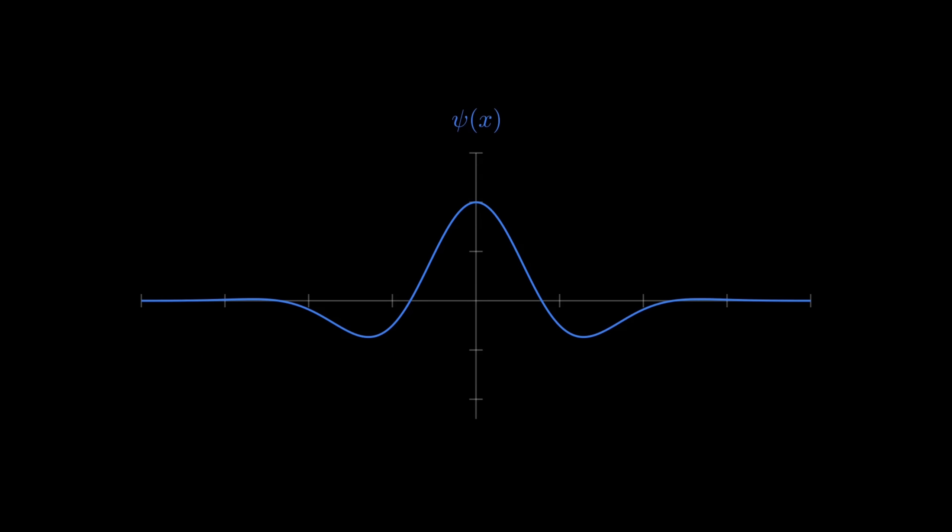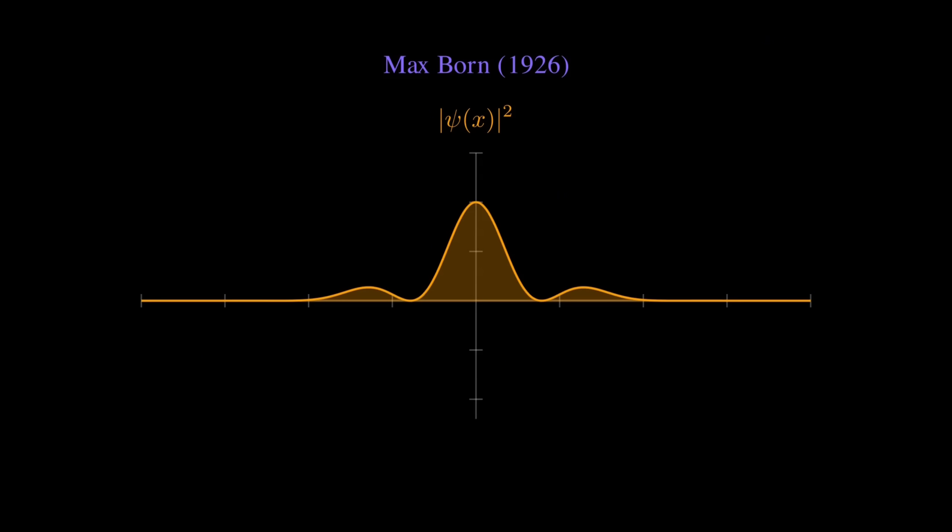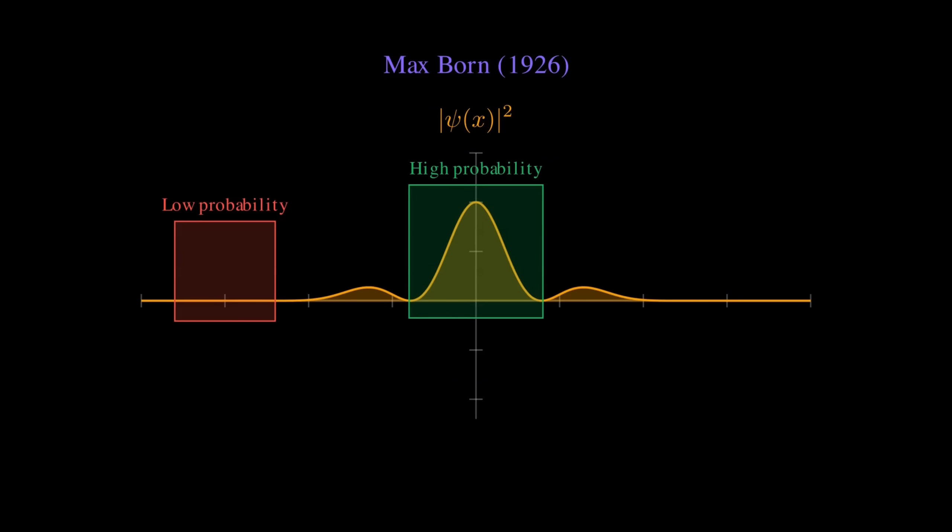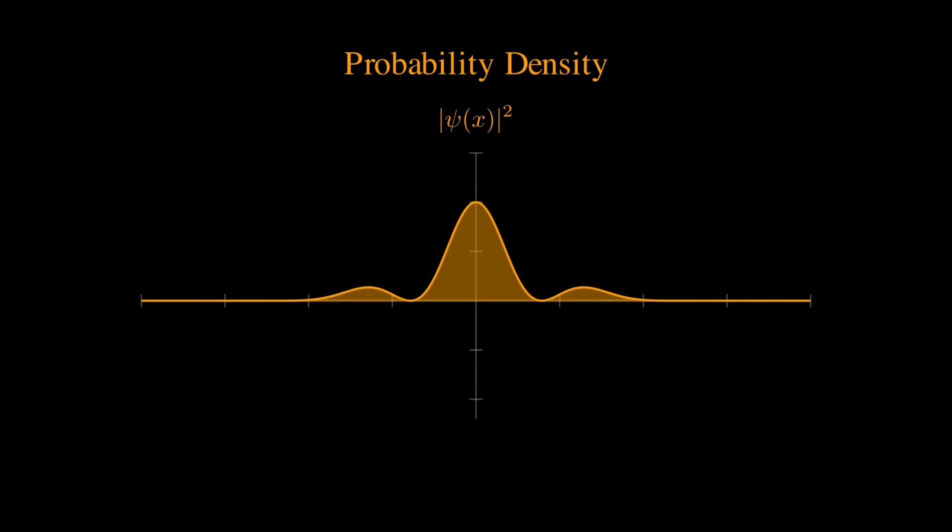So what does the wave function actually tell us? Here's the key insight discovered by Max Born: if you take the wave function and square it, you get the probability of finding the particle at each location. Where the wave function has large amplitude, you're more likely to find the particle. Where it's small, the particle is unlikely to be found. This is called the probability density.